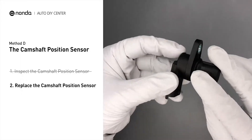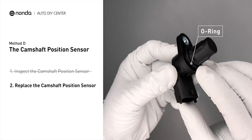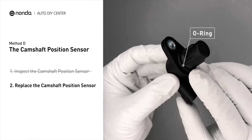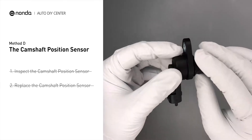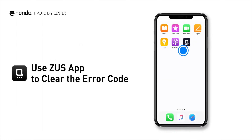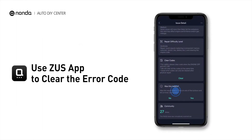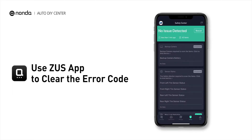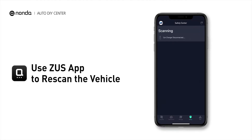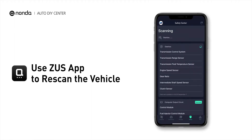Check to make sure the O-ring from the sensor hasn't fallen into its hole, then replace it with a new crankshaft position sensor. Those are four of the most practical solutions to fix Audi's P0017 error code. After the repair, you can use the Zeus app to clear the error code and tap the rescan button one more time to make sure everything is fine with your vehicle.